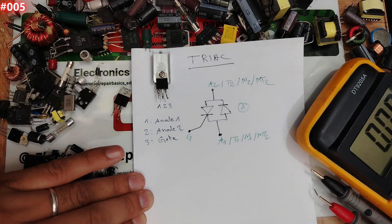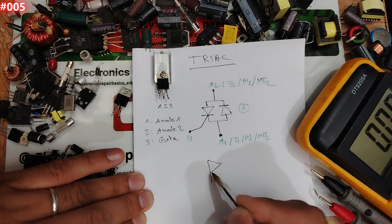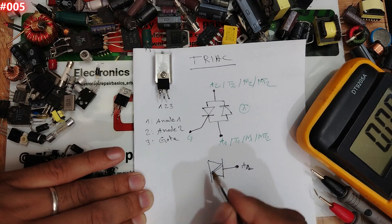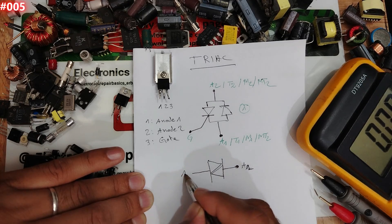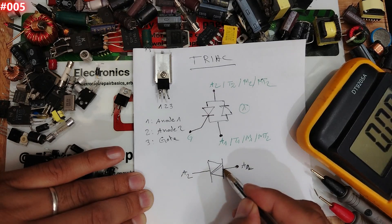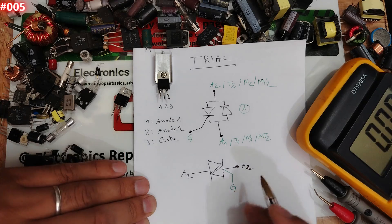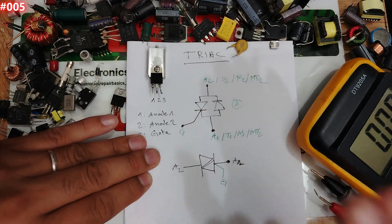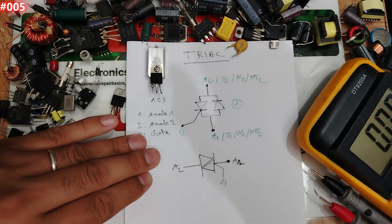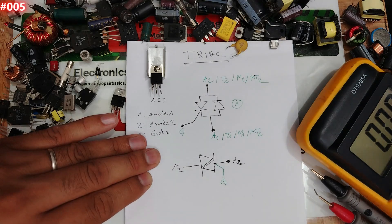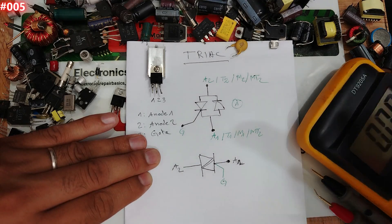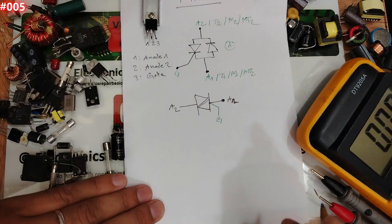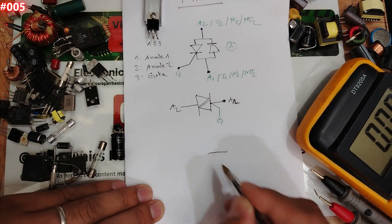The second symbol shows two diodes with anode one, anode two, and the gate. Now I'm going to show you a real circuit to understand how a triac works, before moving on to testing with the multimeter.